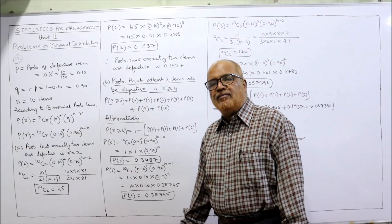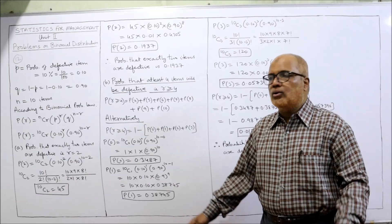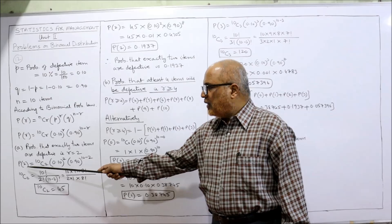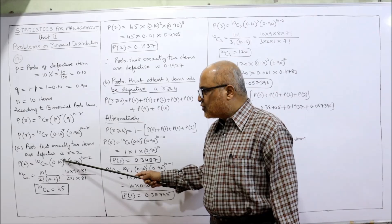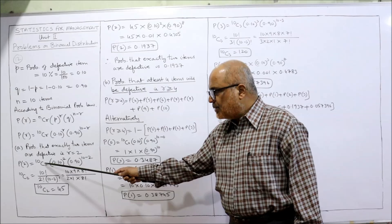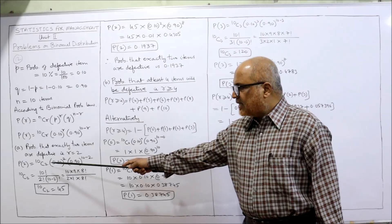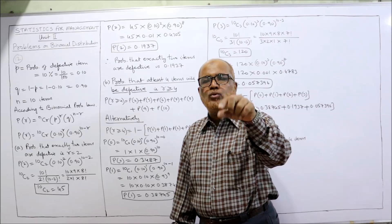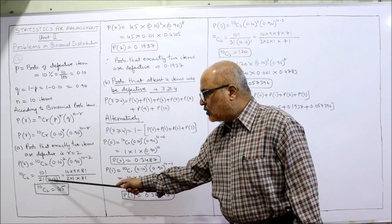For the first question — exactly two items defective — R = 2. So P(2) = 10C2 · (0.1)² · (0.9)^(10−2). We now simplify. For 10C2, the formula is n! / (R! · (n−R)!), giving 10! / (2! · 8!).